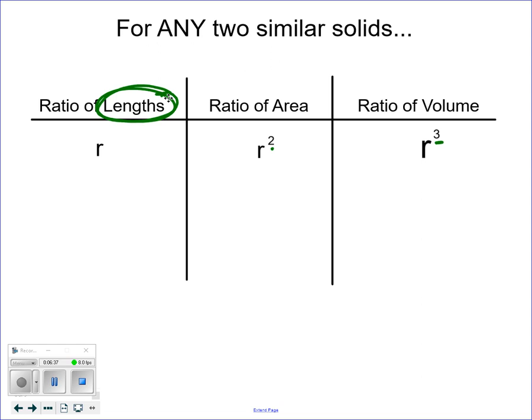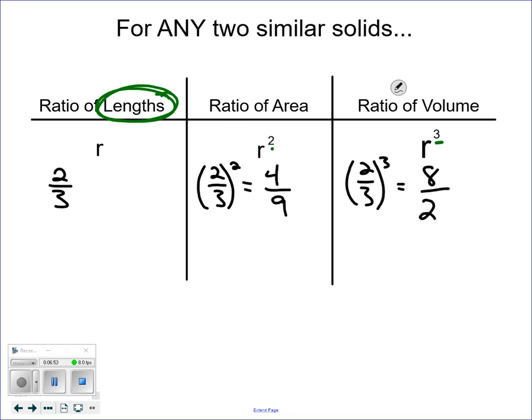So if you look, the 2 thirds from the cones, if we square it, we get 4 ninths, which is the ratio of the areas that we found. And if we cube the ratio of the lengths, then we get 8 27ths, which is the ratio of the volumes that we found.